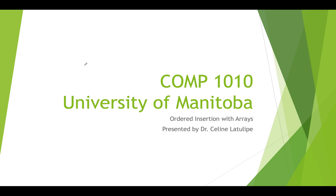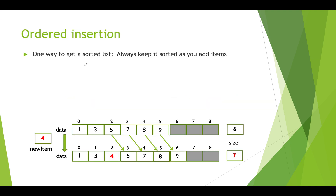Hi, this is Comp 1010 at the University of Manitoba. I'm Dr. Céline LaTulip and today I'm going to be talking to you about ordered insertion with arrays. In order to do binary search we need to have a sorted list, and one of the easiest ways to achieve this is to just always keep your list or array sorted by always adding items in sorted order.